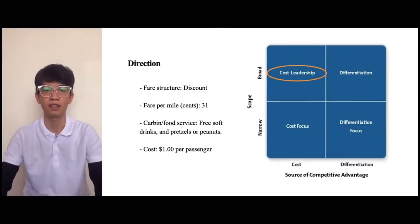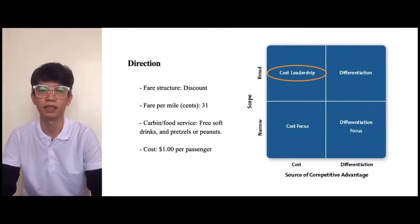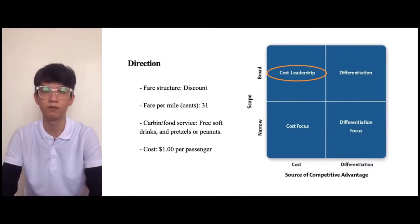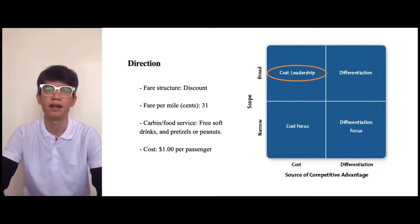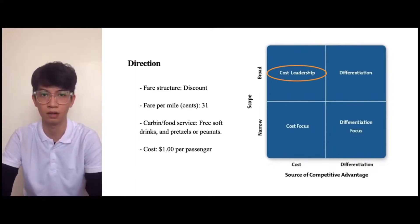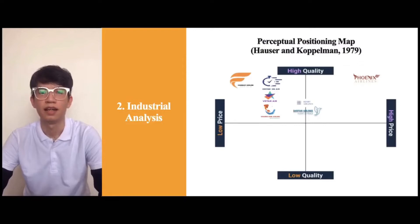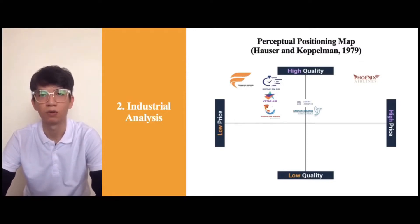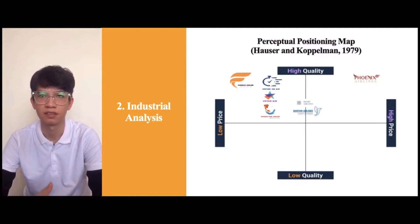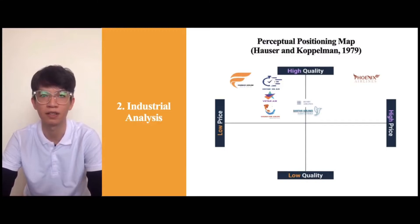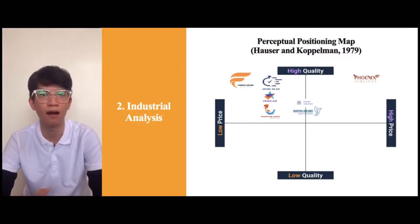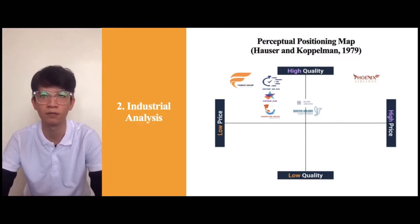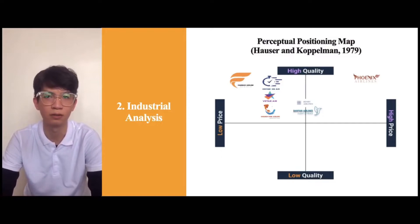Finally, it's about our direction. Farmway has a discount fare structure, but we also serve cabin food with free soft drinks and snacks, and it only costs $1 per passenger. Second is about our industrial analysis. From the start, Farmway Airlines always follows the low-cost strategy, but with high quality, and customer satisfaction is our first priority.